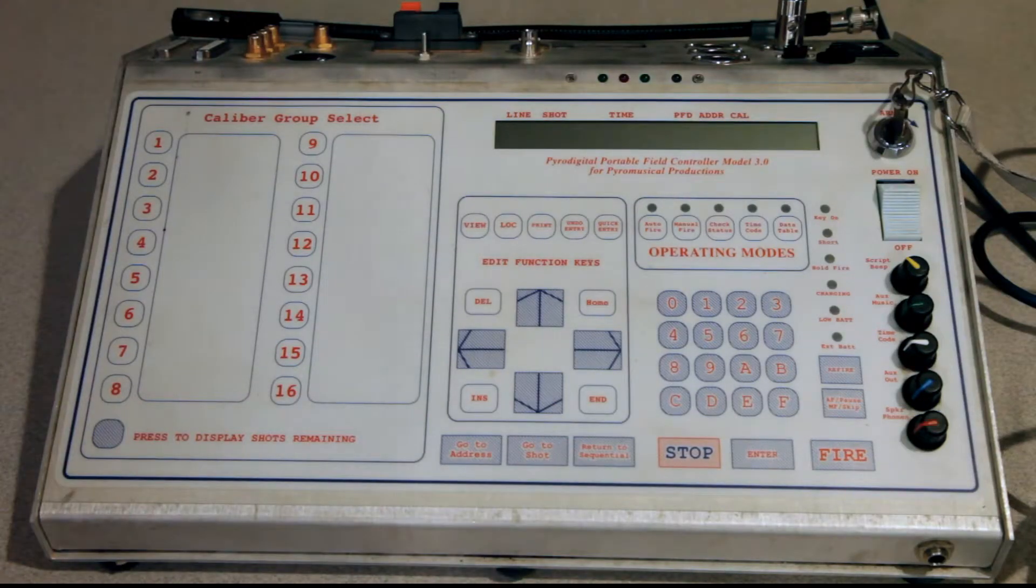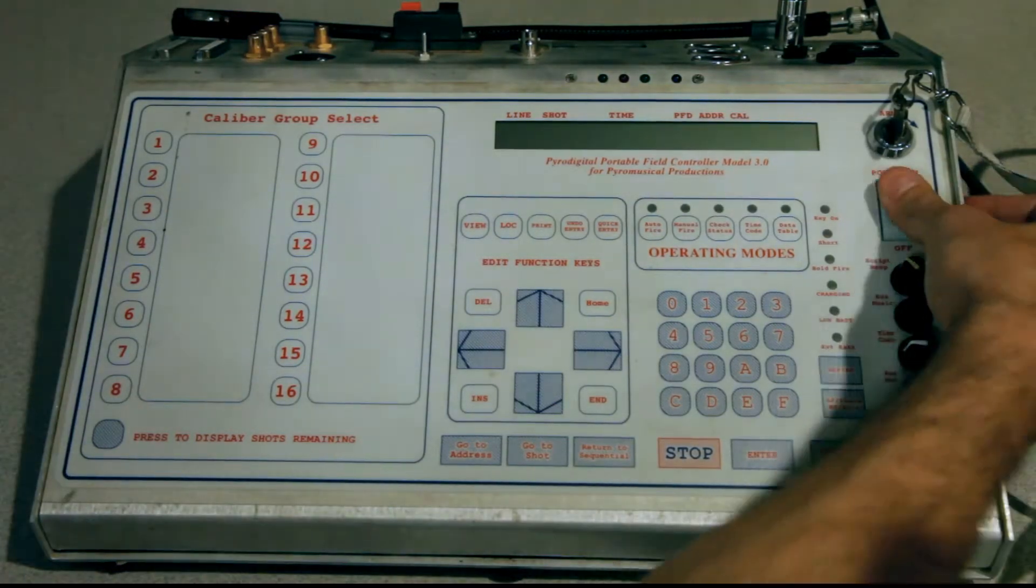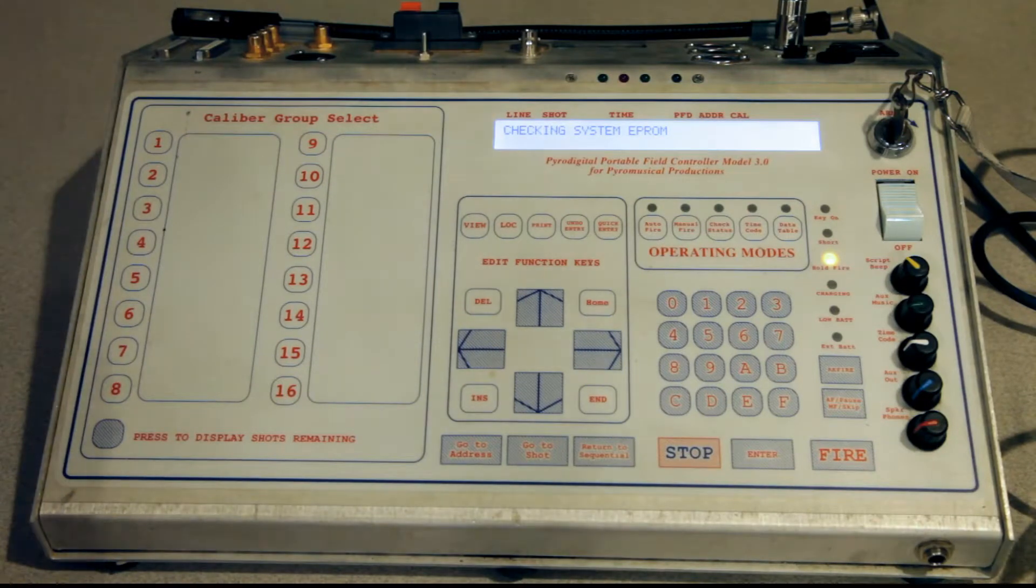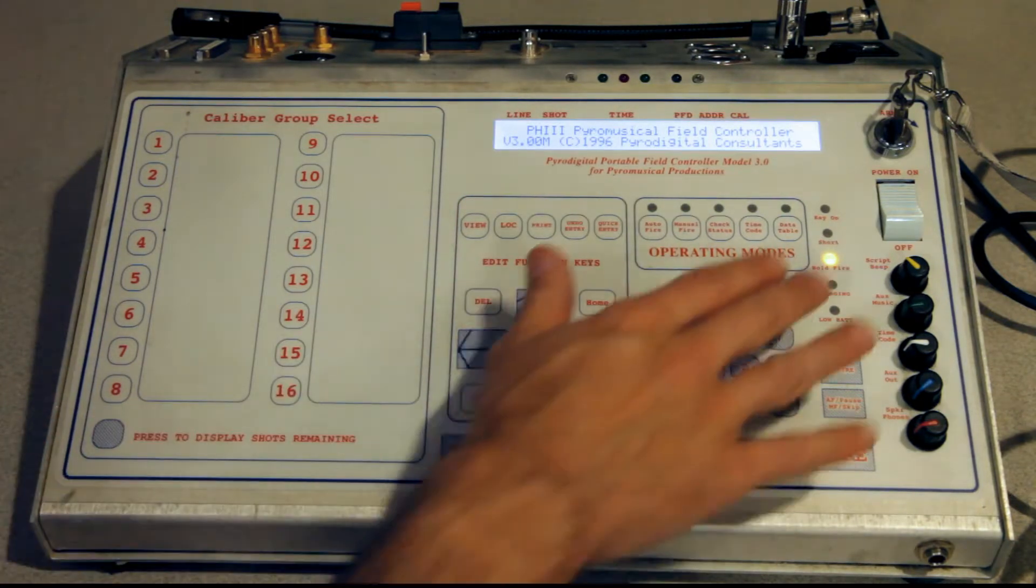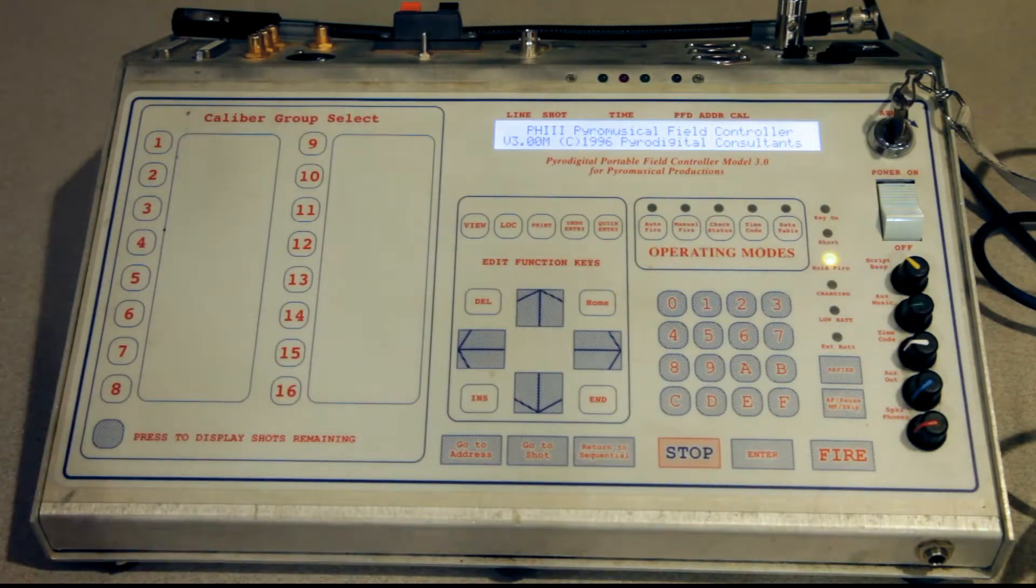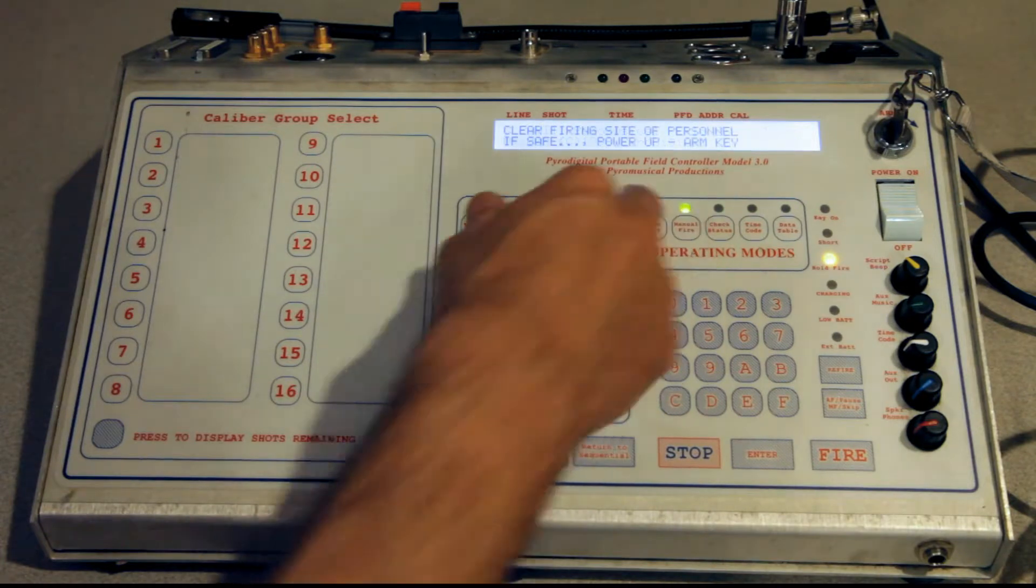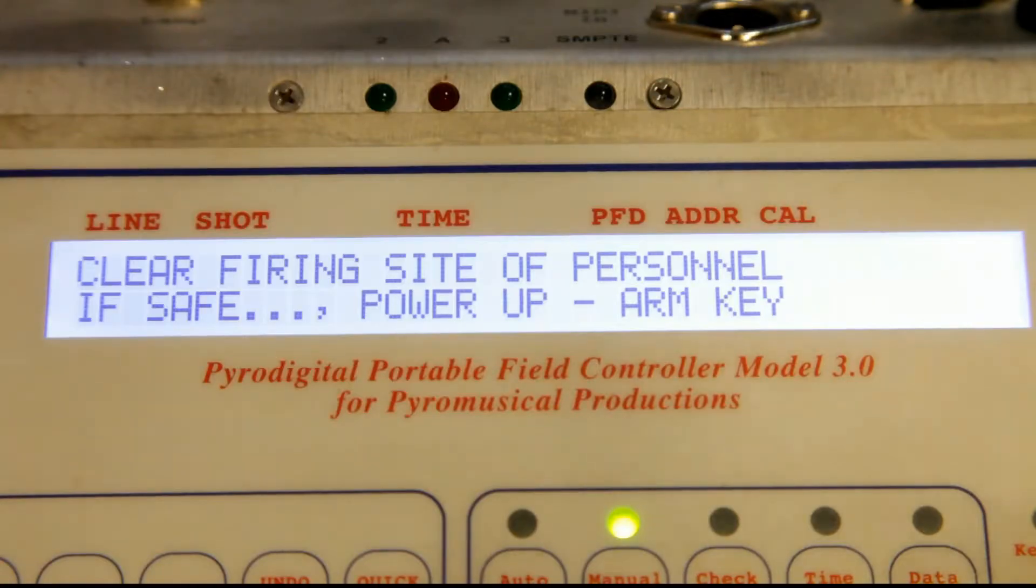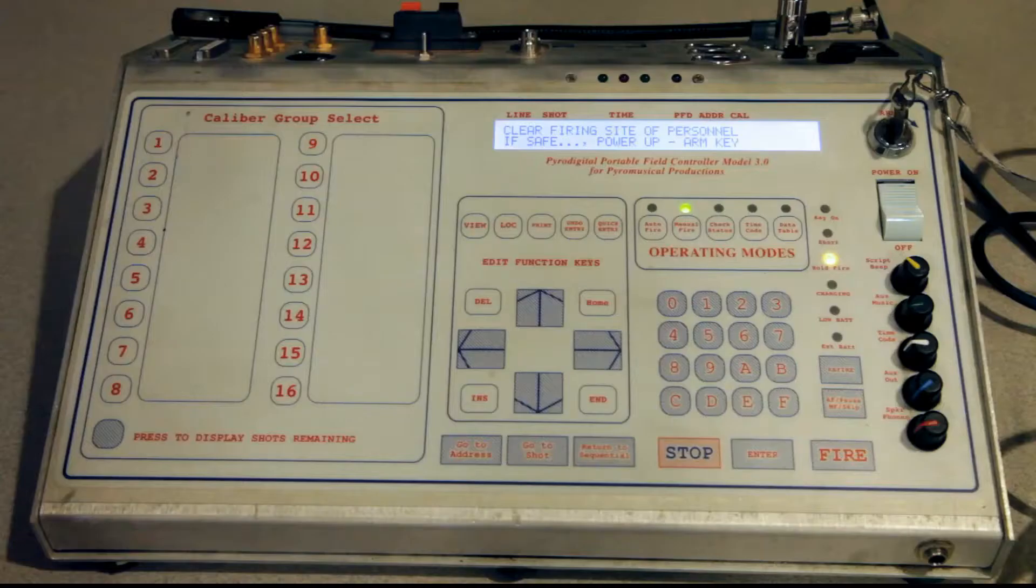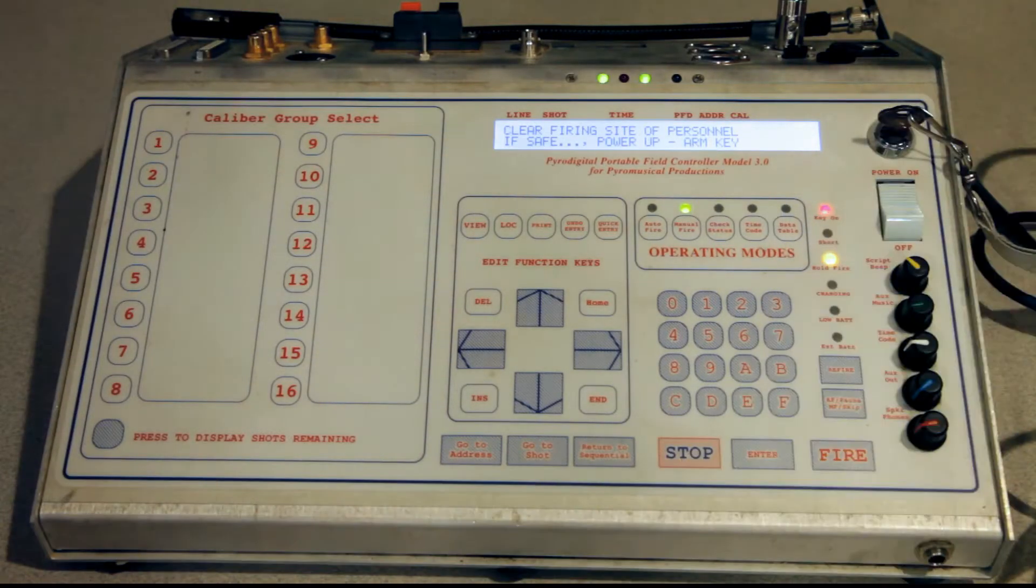When ready to fire in manual mode, turn the controller on. It would normally go through its EEPROM check. If you were in a hurry out on the field, you can always bypass by hitting any one of the operating mode buttons. We're going to go into manual fire mode. It's going to ask you to clear the firing site. Do a visual check, make sure the firing site is clear, turn the arming key.